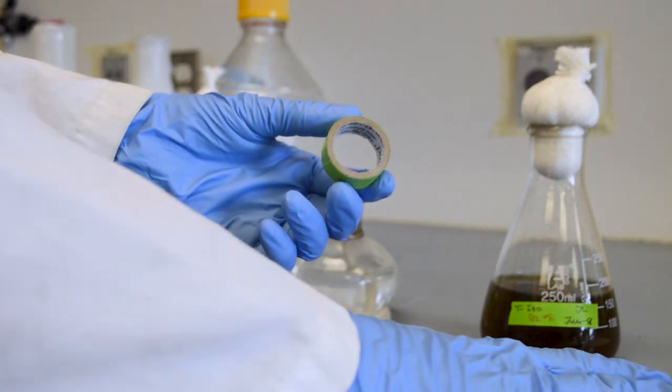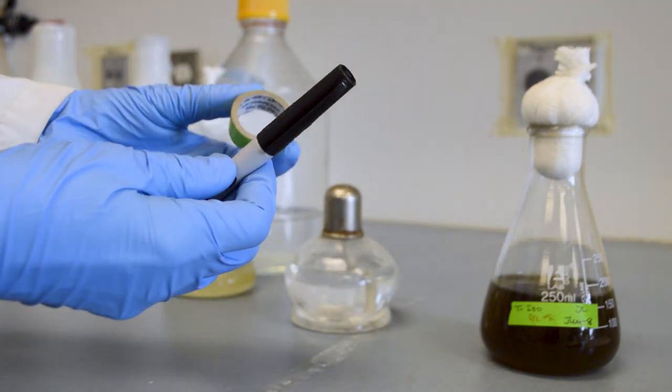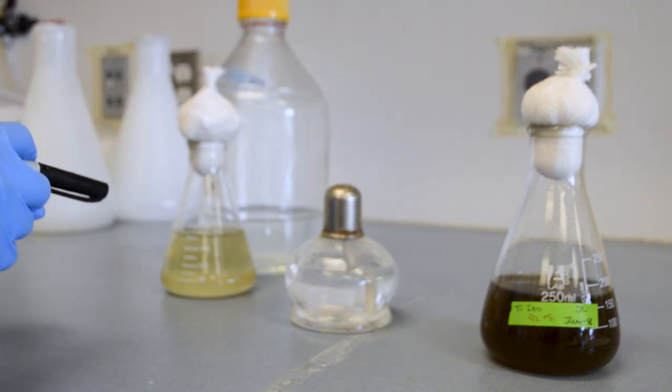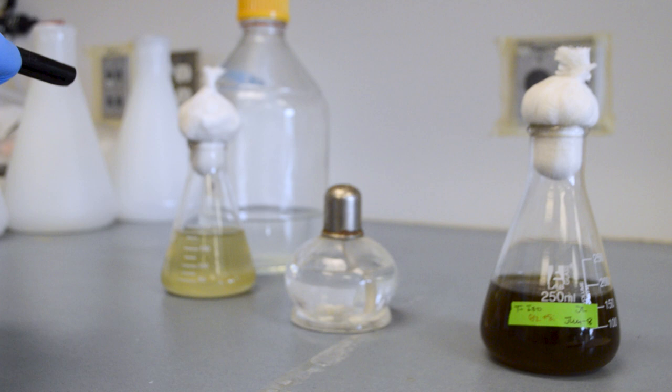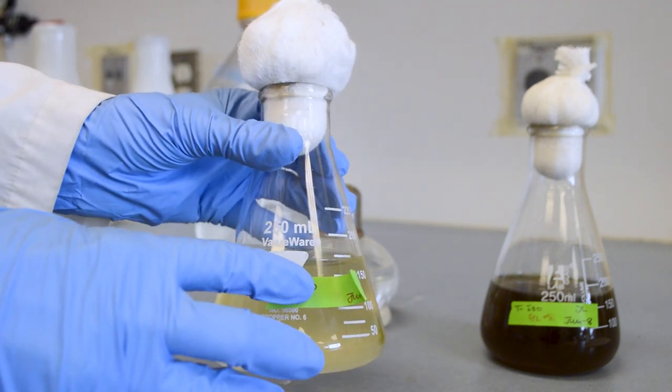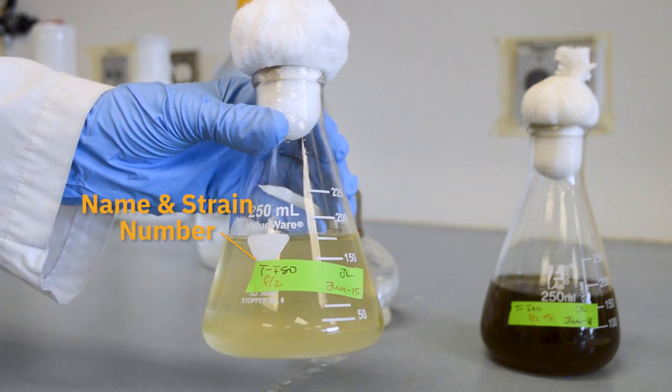Now we will label our new culture vessel. If you are transferring more than one species at a time, it is especially important to label your flasks before any transfers take place. Labels should include the species name and strain number, the type of media, the date, and your initials.